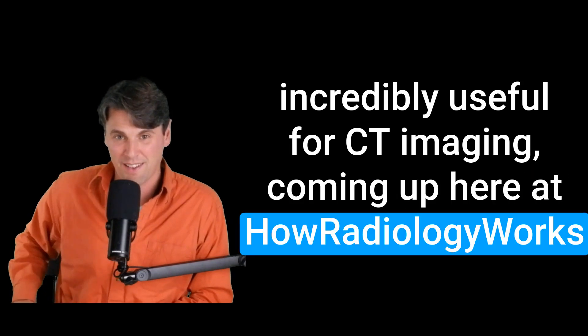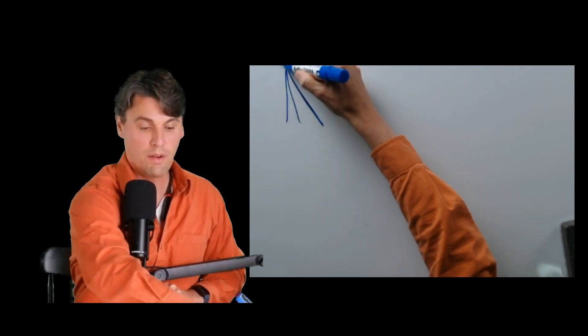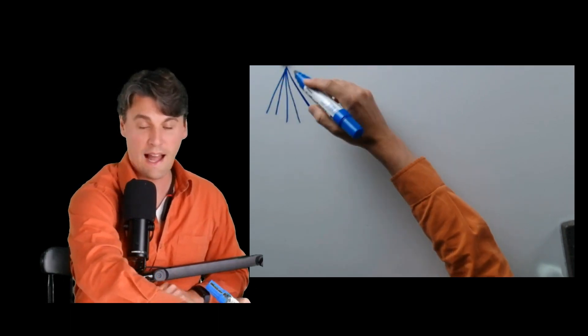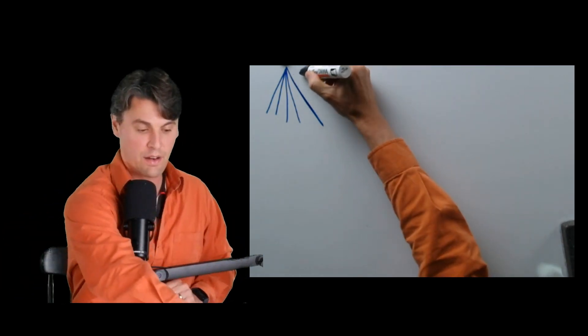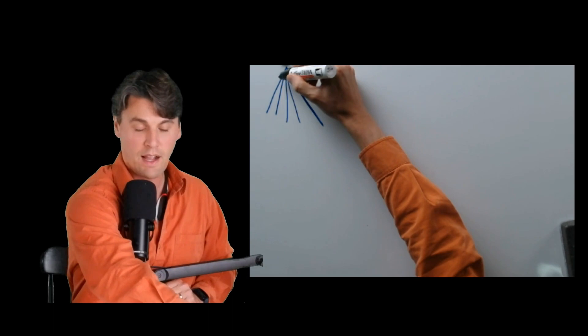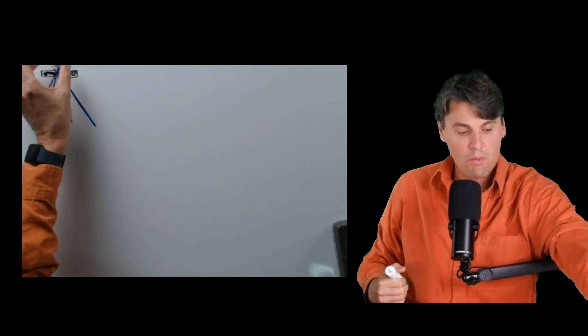Here at howradiologyworks.com, we have our x-rays coming out of our x-ray tube. We talked about how we like to collimate those x-rays — controlling the size of the field of x-rays used in our imaging. But separate from that, we'd actually like to provide some filtration, where we change the actual energy distribution of those x-rays passing through.